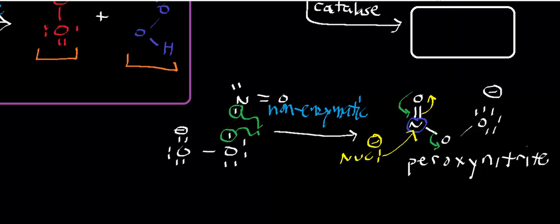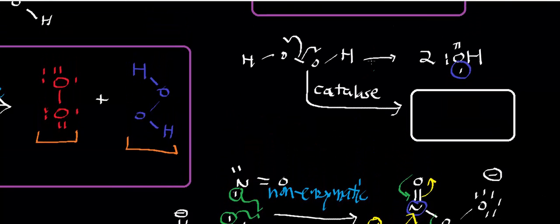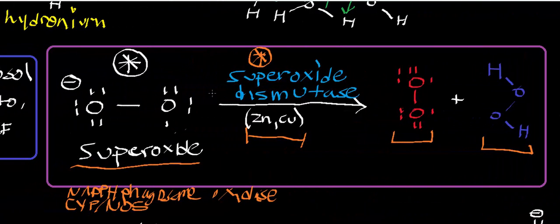In the next video, we'll look at the reaction of catalase — one of the fastest enzymes known to man. To summarize: superoxide dismutase uses two superoxide molecules and produces molecular oxygen and hydrogen peroxide. I hope this video gave you some intuition on this enzyme. See you in the next video.